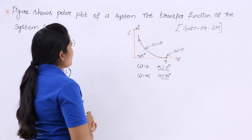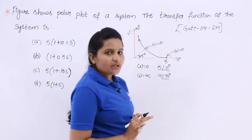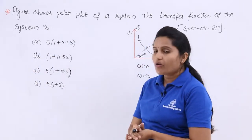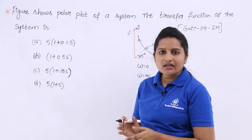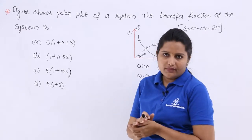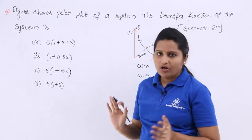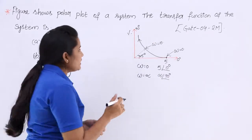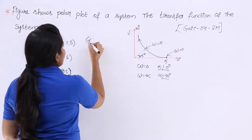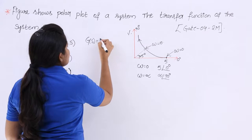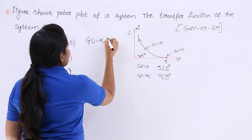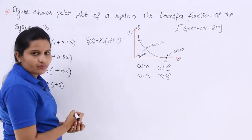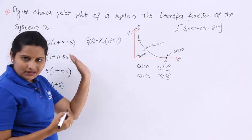Observing the options, all options have only a numerator polynomial with no denominator. So we can take our open loop transfer function in the standard form: G(s) = k × (1 + s·τ).